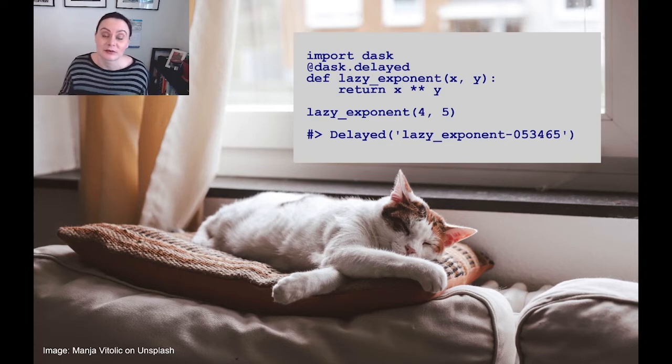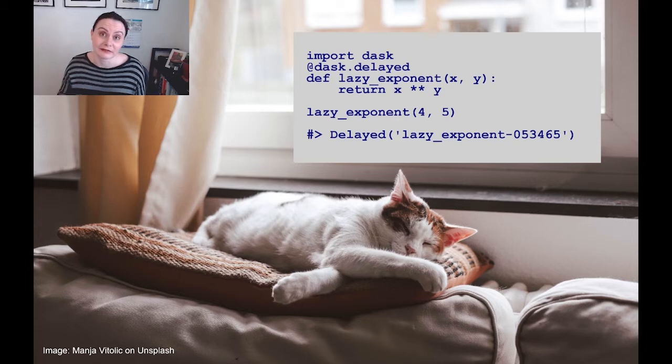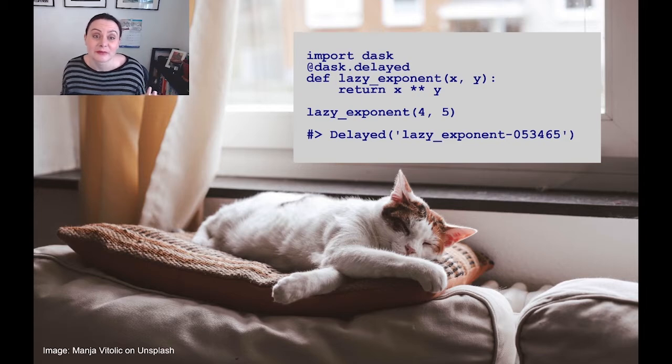This, added to a Python function, tells Python this function is different and special and it's going to behave differently from a regular function. This is a concept you'll find in lots of frameworks for parallel computing and your framework will just not evaluate the requested computations until you explicitly tell it to.